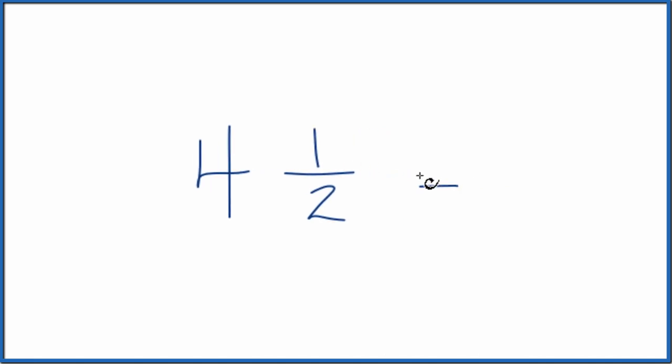To get it to an improper fraction, we want to have the numerator larger than the denominator. So here's how you do it. You take the whole number, four, times the denominator, two, and then add the numerator.